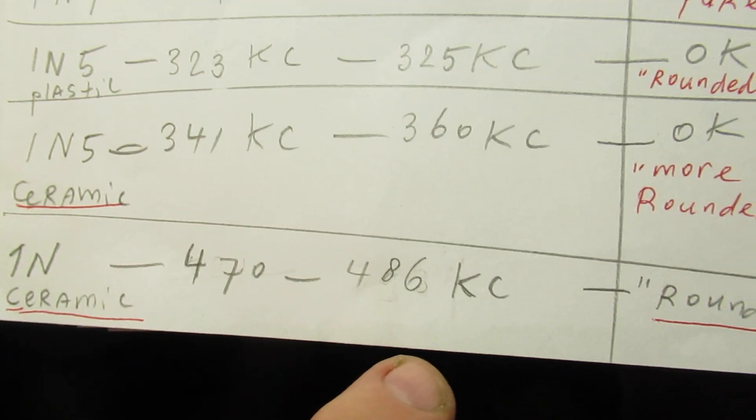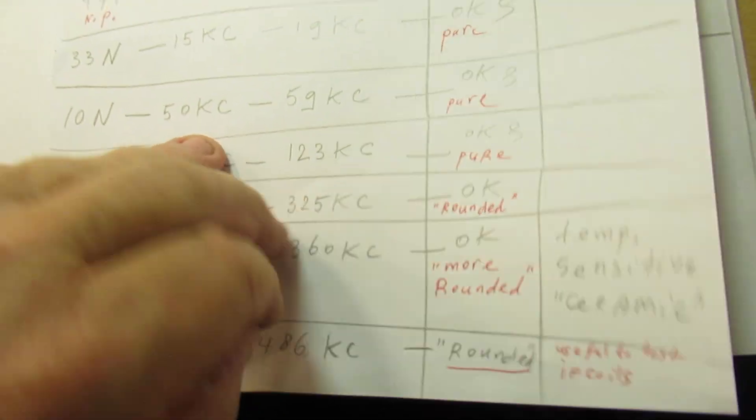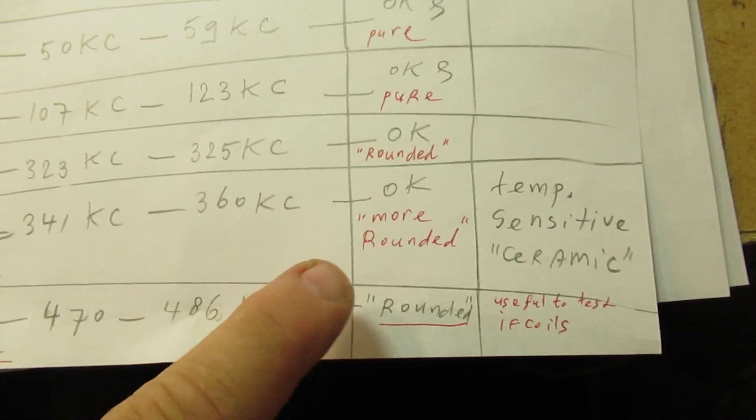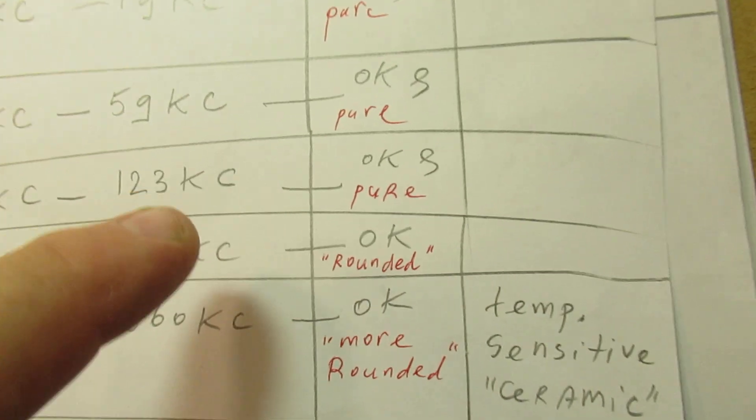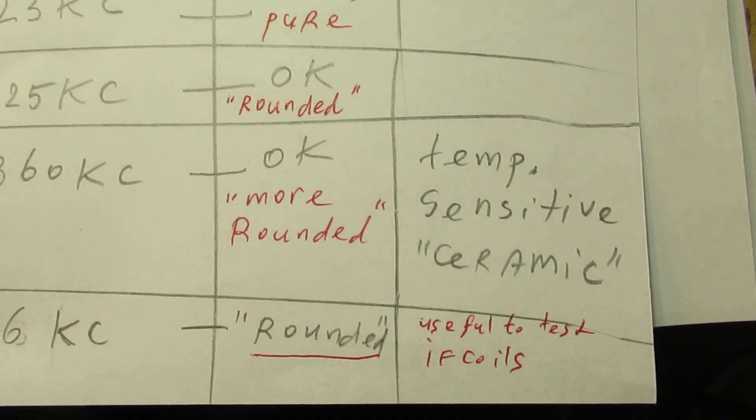1 nanofarad, that is 1000 picofarad, we go to this range. 470 up to 486 kilocycles, and the waveform gets on the higher frequencies somewhat rounded.